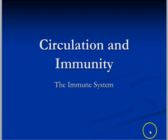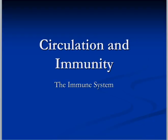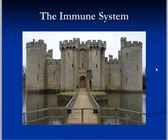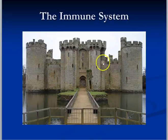Today we're going to focus on the last component of the circulatory system called the immune system. What I want you to think about is that the immune system is really similar to a castle analogy. With our bodies, we've got little openings and places where things could get inside that maybe aren't supposed to — things like bacteria and viruses that we call pathogens.